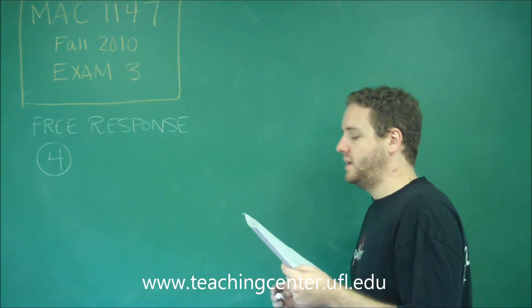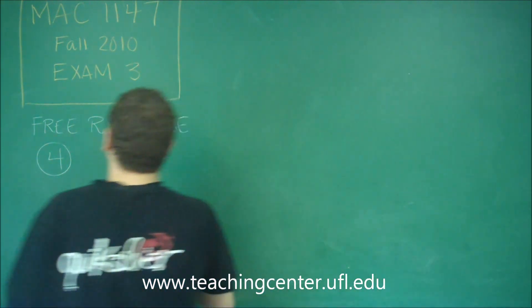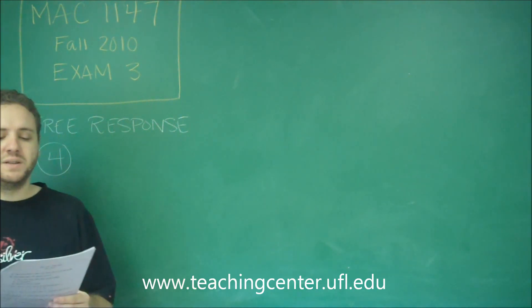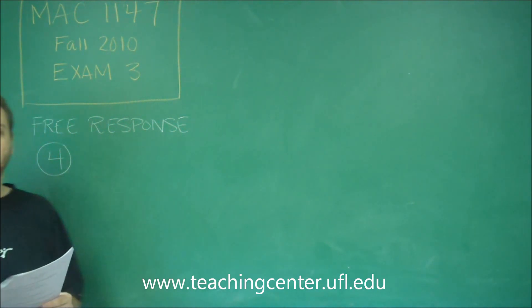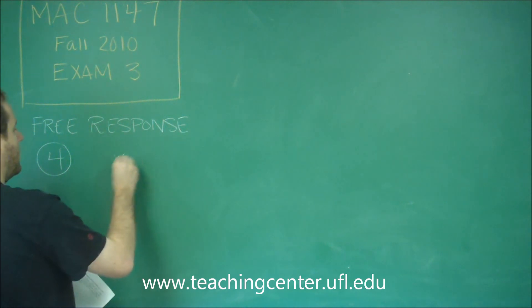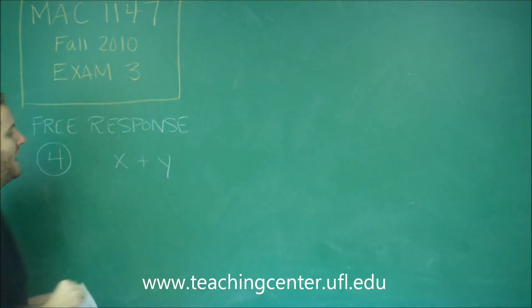So what we need is a situation for the downstream and for the upstream. On the downstream, we were with the current. So the speed of the boat and the speed of the current would be added together.